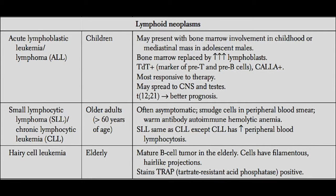The next cancer we're going to talk about is called chronic lymphocytic leukemia, CLL. ALL was more prominent in children, and CLL is actually much more common in older adults, generally greater than 60 years old. These patients can have CLL for many years and be completely asymptomatic — it's one of those indolent cancers that takes a lot of time to get going. You usually diagnose it by seeing smudge cells on the peripheral blood smear.